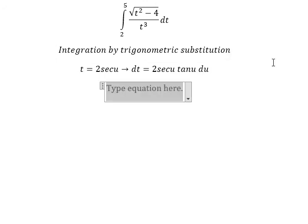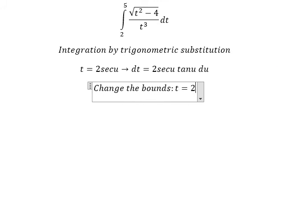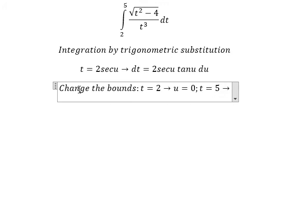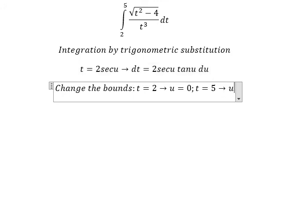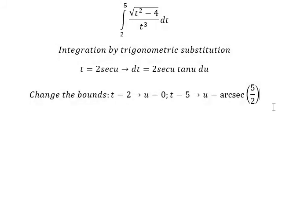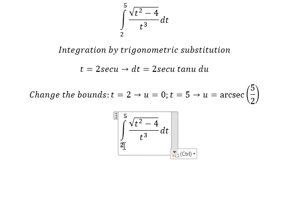So we need to change the bounds. When t equals 2, we put 2 in here and divide both sides by 2, so u should equal 0. When t equals 5, we divide both sides by 2, so u equals arcsec(5/2). So for the bounds: 0 maps to 0 and 5 maps to arcsec(5/2).